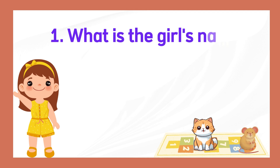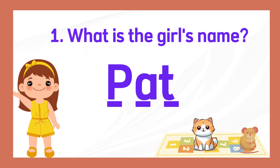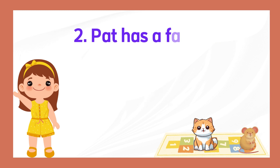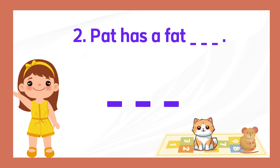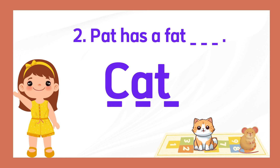Number 1. What is the girl's name? What is the girl's name? Bat. Number 2. Bat has a fat blank. Bat has a fat blank. Cat.